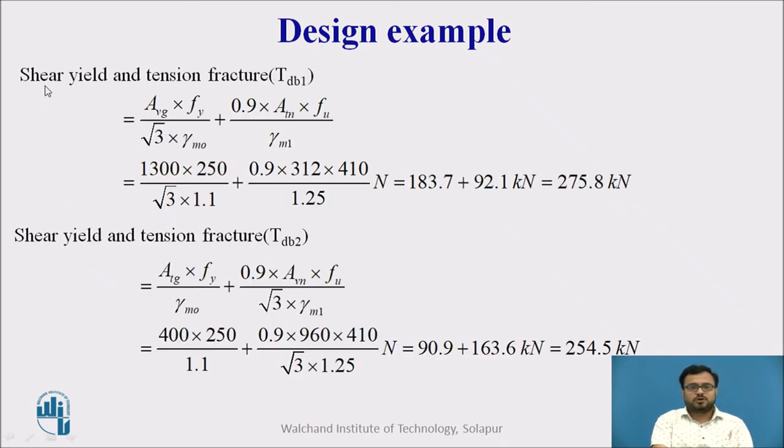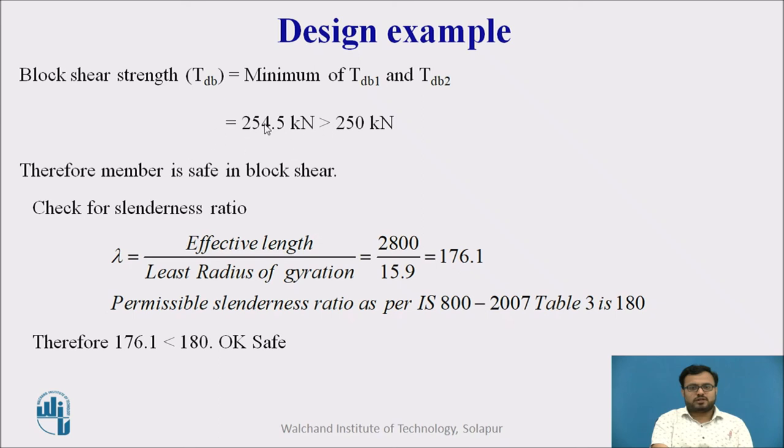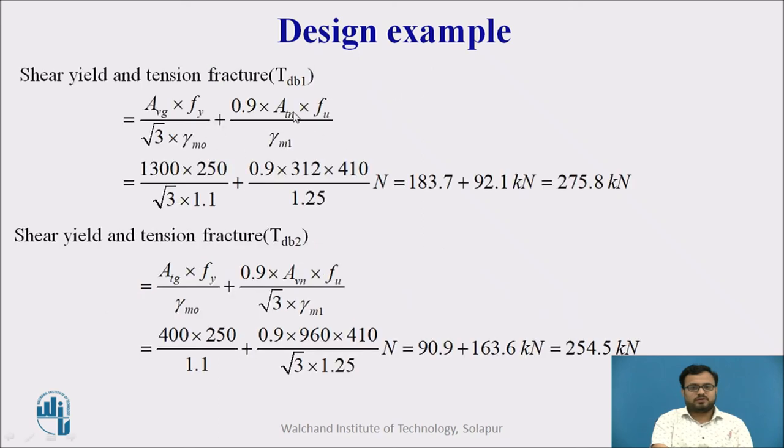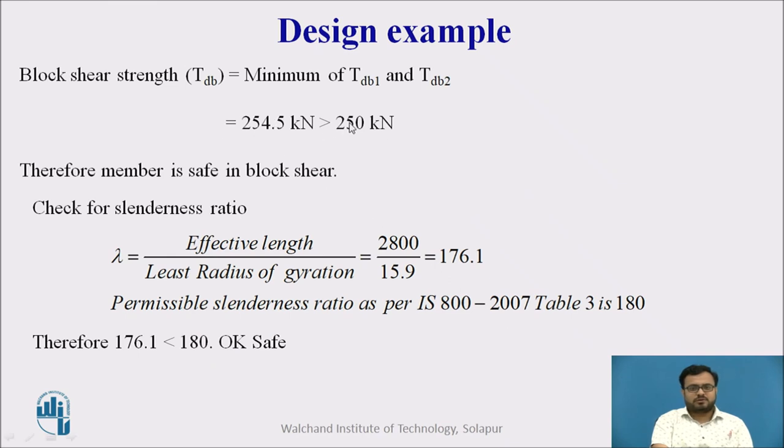Then by using the formula for shear yield and tension fracture TDB1. We have determined in the previous slides that AVG and ATN, ATG and AVN. We will put all these terms and we will determine TDB1 equal to 275.8 kN and TDB2 equal to 254.5 kN. We will compare it with this one. Whichever is less, we will take that as our strength in block shear failure. We have determined this here. And we will take the lesser one. And we compare it with our given factored force. It is greater than our given factored force. Therefore, it is safe in block shear failure.